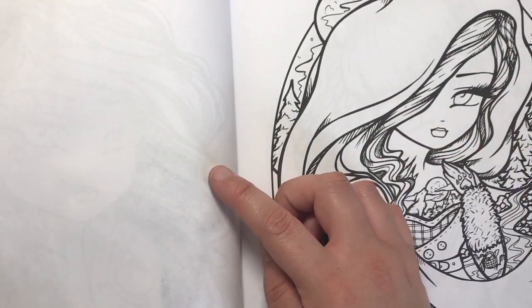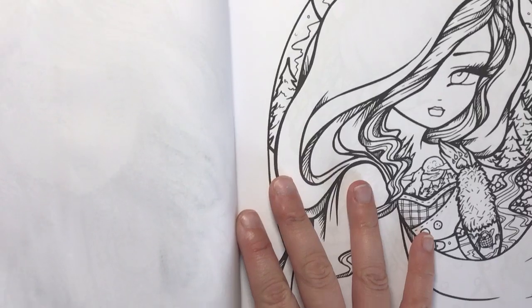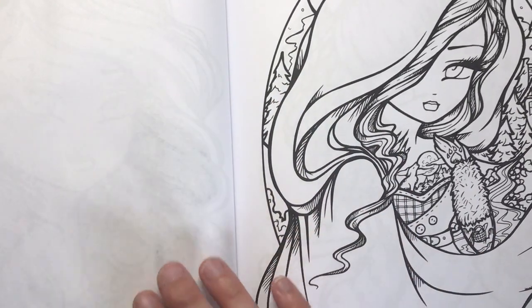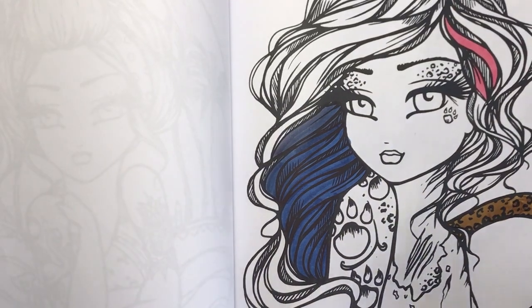Let's just see how that looks on the other side. As you can see, nothing. You can just about see a shadow of where I've coloured, but there's no actual bleed through. So perfect for double-sided colouring books.